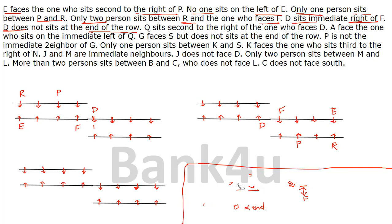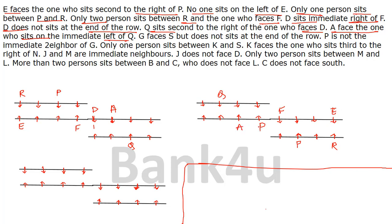Don't be discouraged by the length of the explanation — I am going through it calmly. The next clue: Q sits second to the right of the one who faces D. So the person facing D's second right is Q. Following that, A faces the one who sits on the immediate left of Q, so A is placed accordingly.